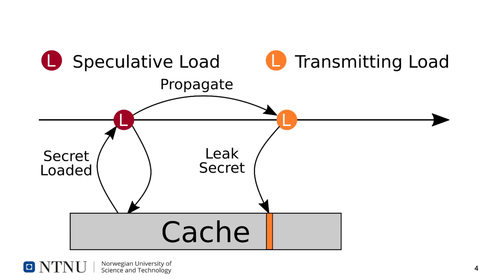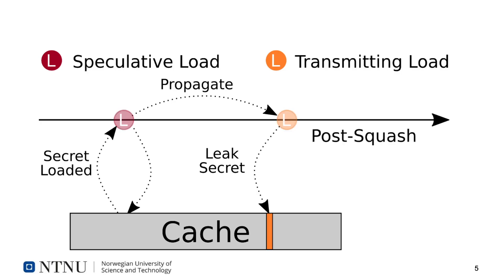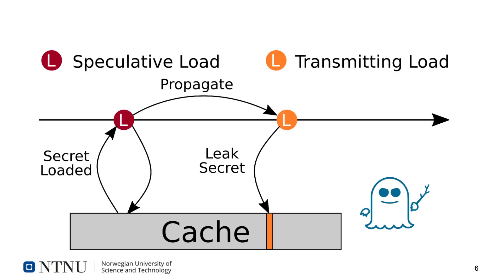Later on, when the system squashes the incorrect prediction and resumes correct execution, this leaked secret is still visible in the cache hierarchy due to the speculative access. A class of attacks, known as speculative execution attacks, most famous of which Spectre, exploit this to intentionally steal and leak secrets.